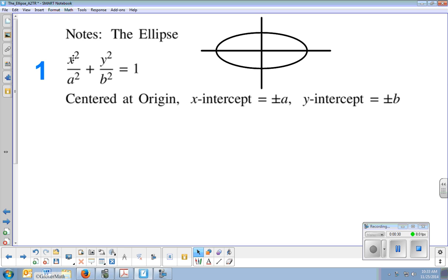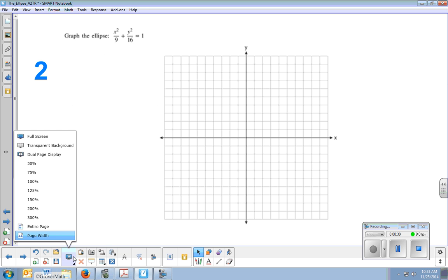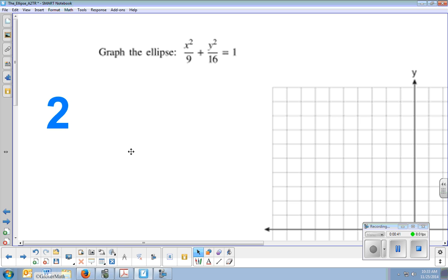So here's your standard form. It's x squared over a squared plus y squared over b squared equals 1. Now, let's actually look at an example while I explain this here. So in the example that I gave you for the first problem is x squared over 9 plus y squared over 16 equals 1. So you'll see an x squared and a y squared.